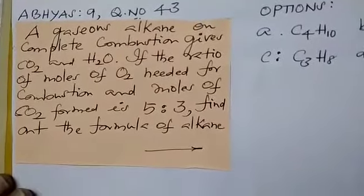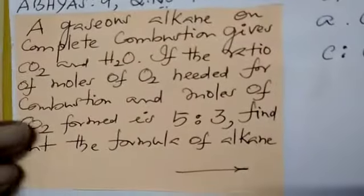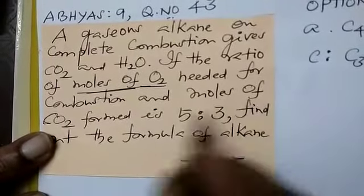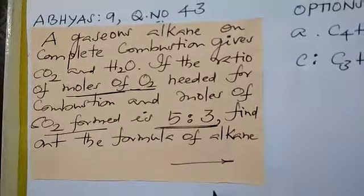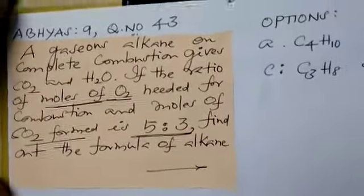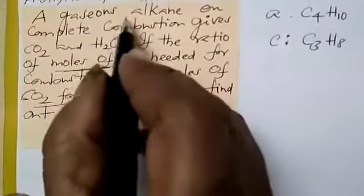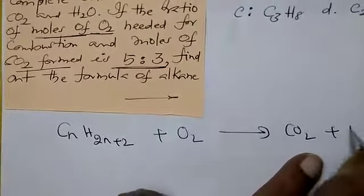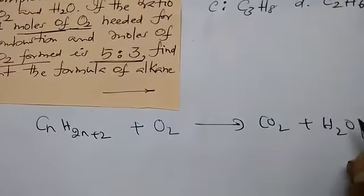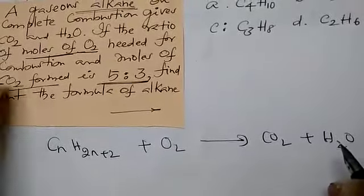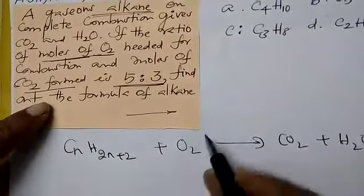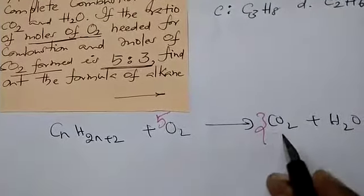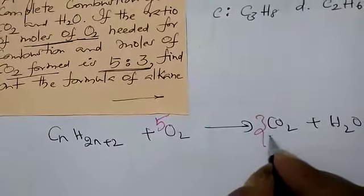A gaseous alkane on complete combustion gives carbon dioxide and water. If ratio of moles of oxygen needed for combustion and moles of CO2 formed is 5 is to 3, find the formula of alkane. Very simple question, I'll give it in a short manner.